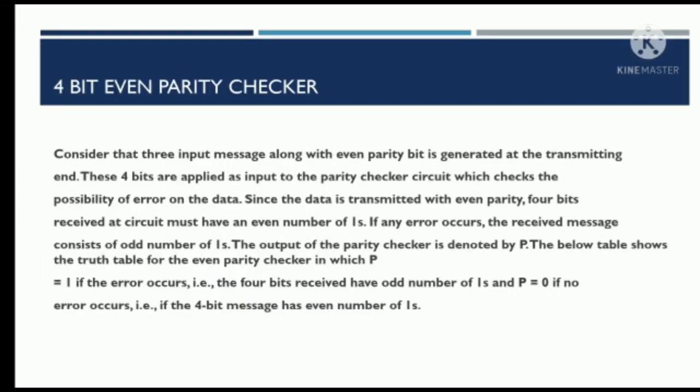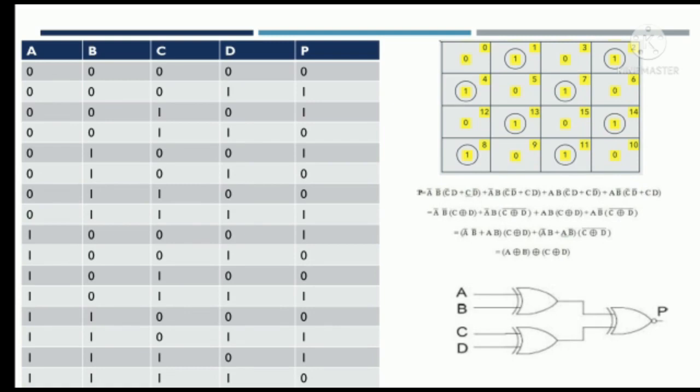We will now study the 4-bit even parity checker. A 3-bit input signal with one extra parity bit has been transmitted from the transmitter end to the receiver's end. We need to check whether the data received is correct or contains errors. In even parity, if the number of ones is even, the parity bit P is assigned 0 — indicating no errors. If the number of ones is odd, P is set to 1 — indicating a possible error in transmission.